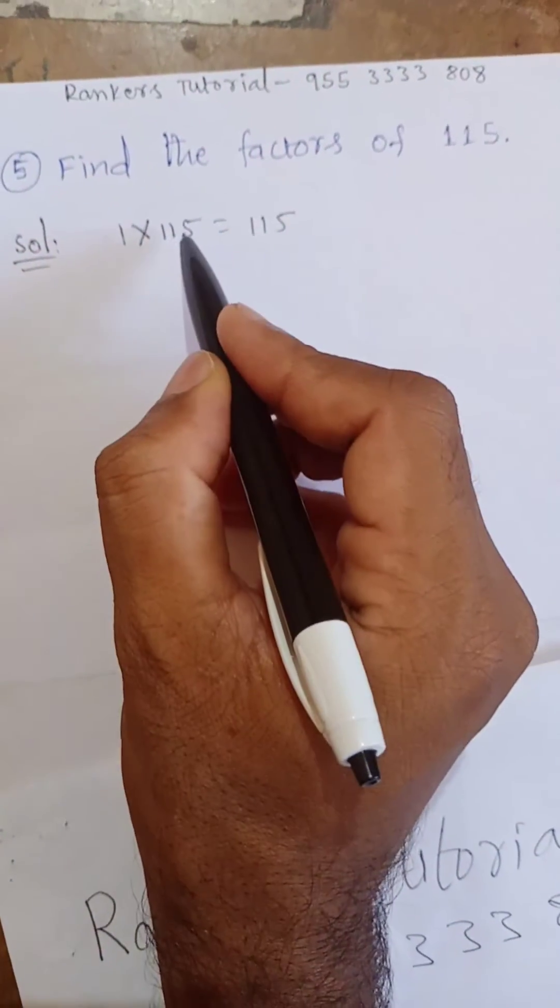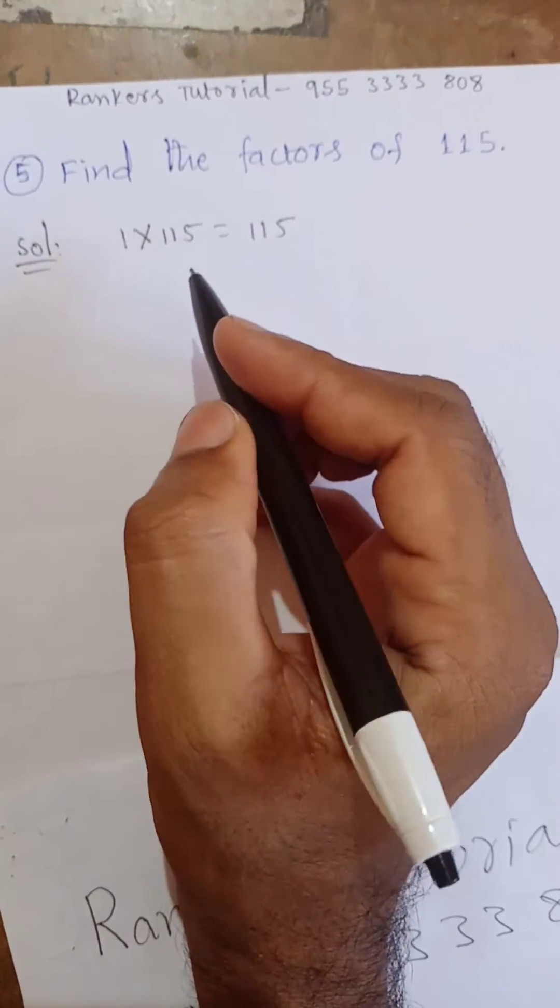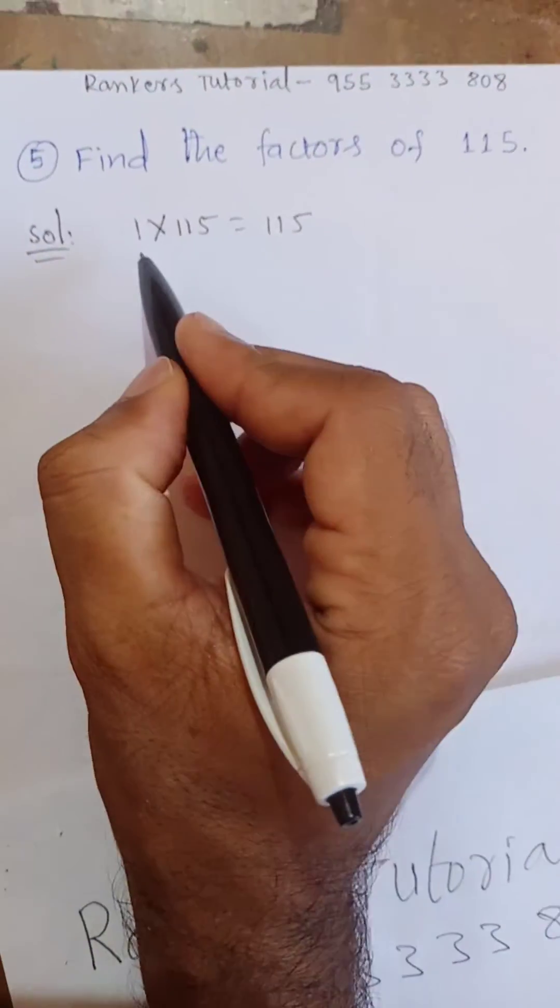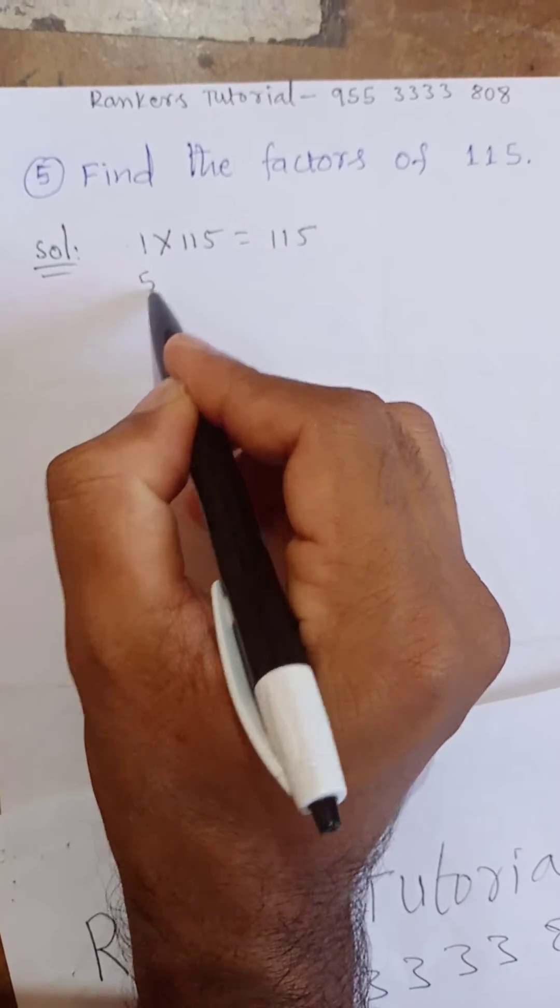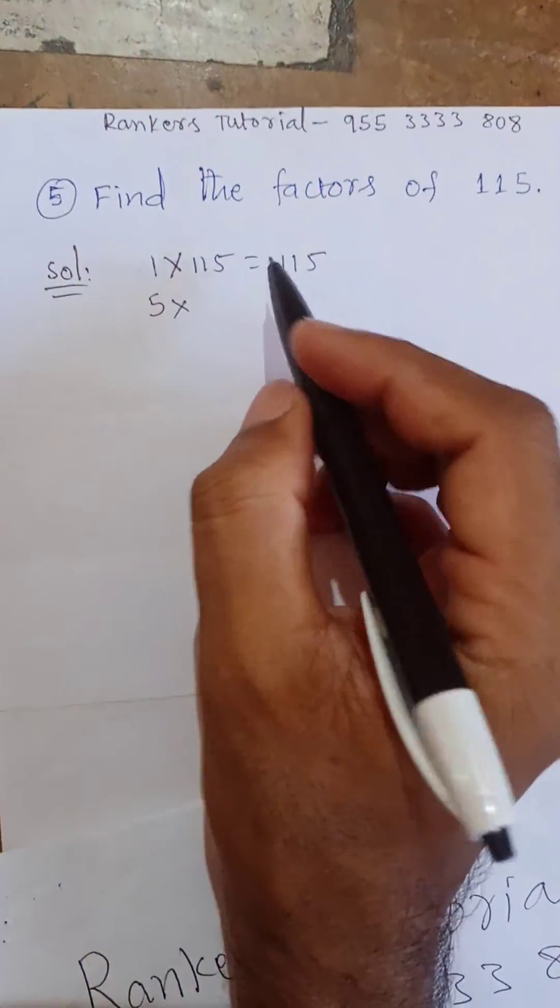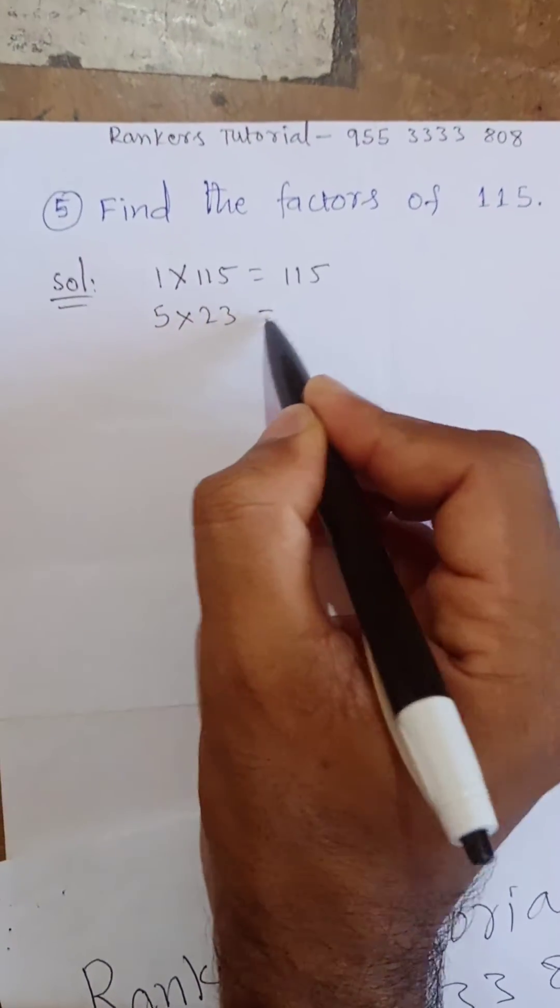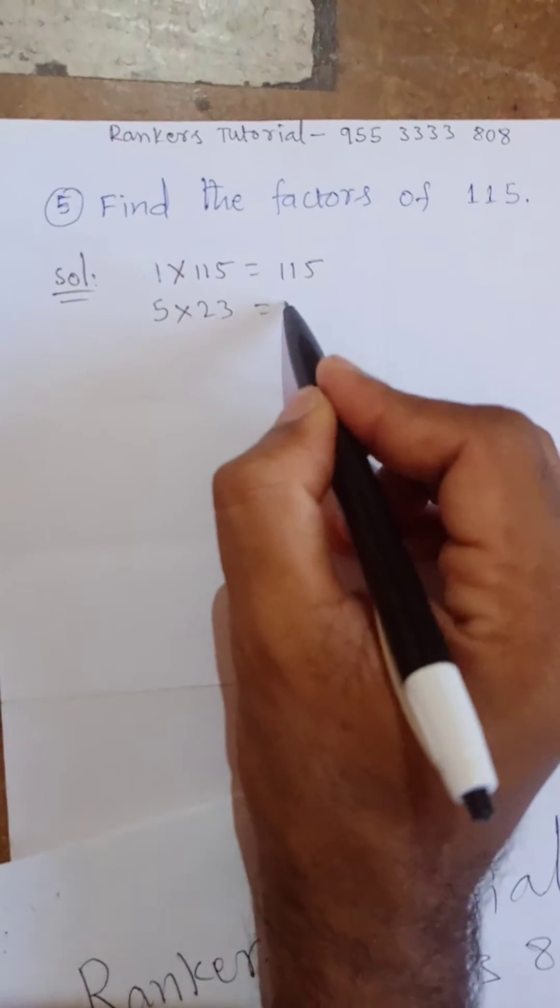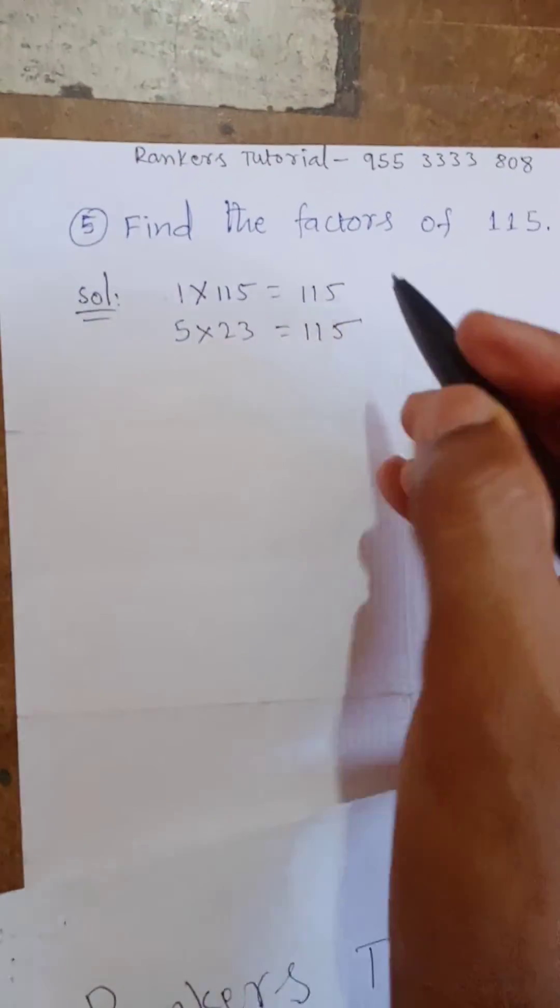Next, the last digit is 5, so 115 will also come in the 5 table. You write here 5 into 23 equals 115.